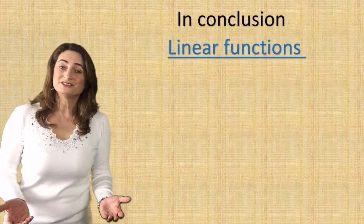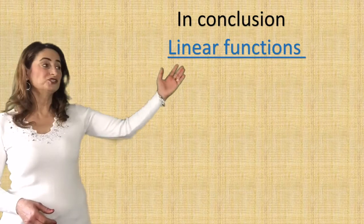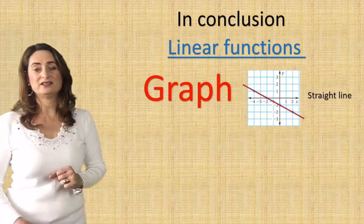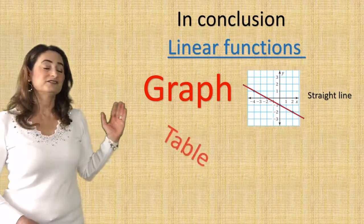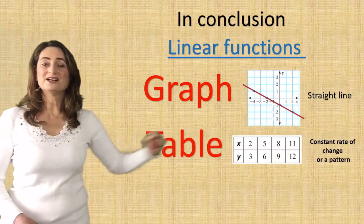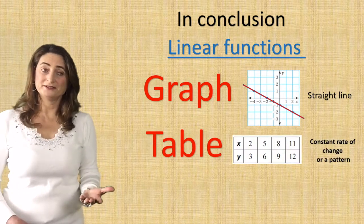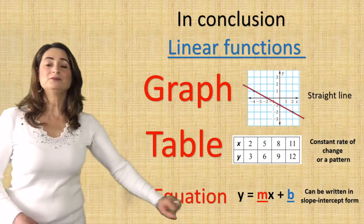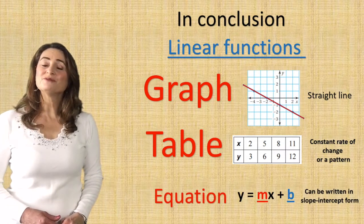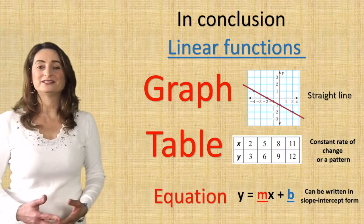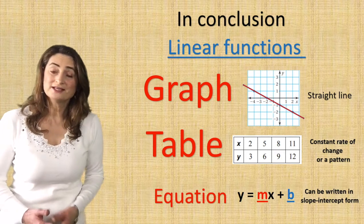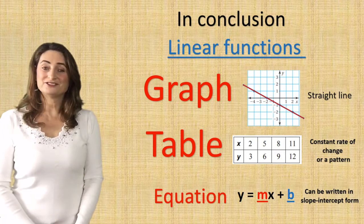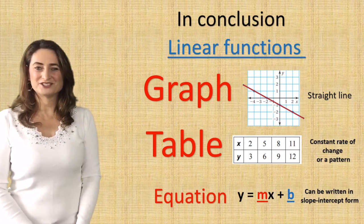In conclusion, for today's lesson about linear functions: if graphed, they must create a straight line; from a table, they must have a constant rate of change or pattern; and from an equation, you must be able to write it in slope-intercept form. Otherwise it's a nonlinear function. That's it for today's lesson — thank you for watching.